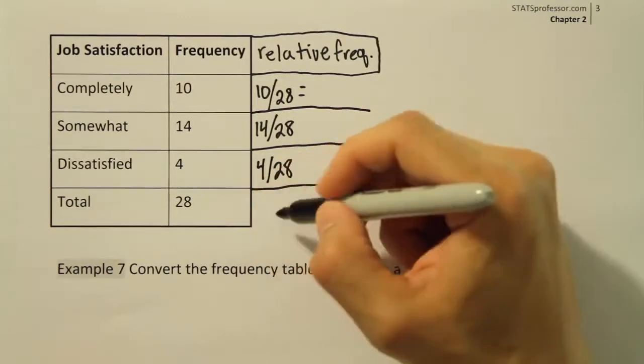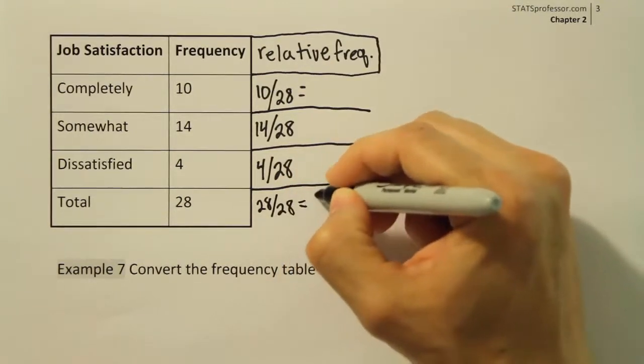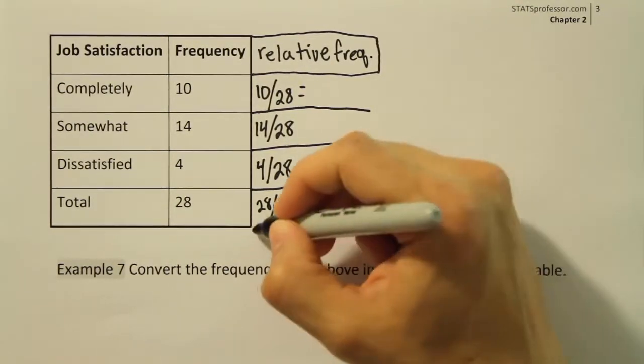And then of course if you did 28 divided by 28, you would just get 1, right? 28 divided by 28, you just get 1, which is what we should get for that answer.